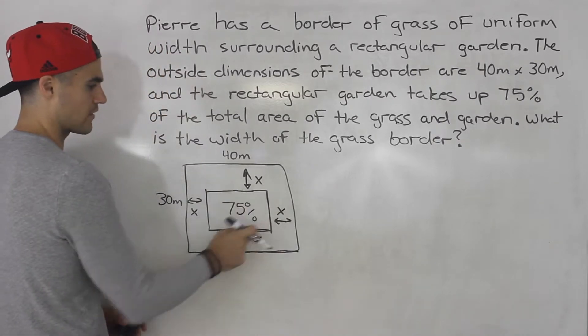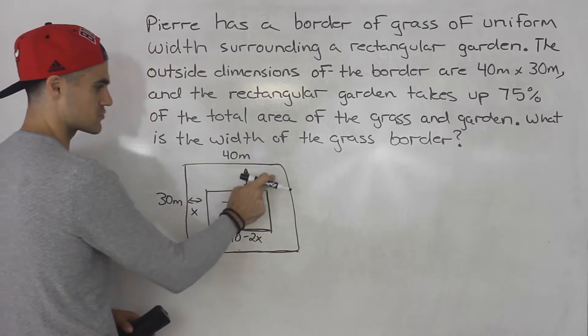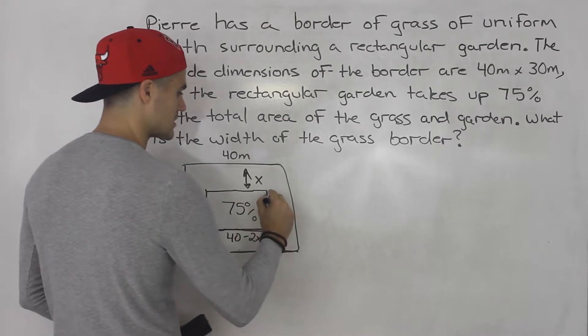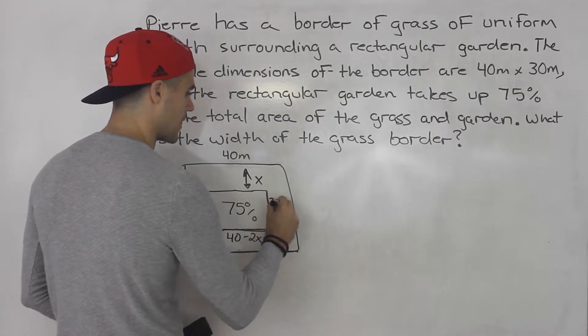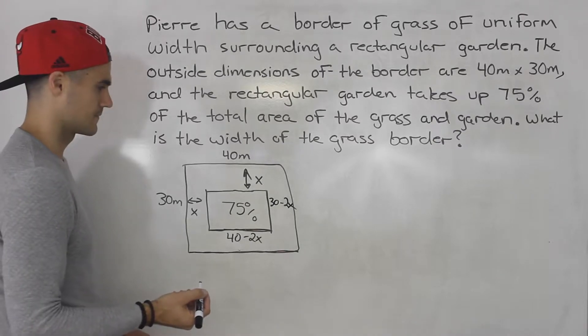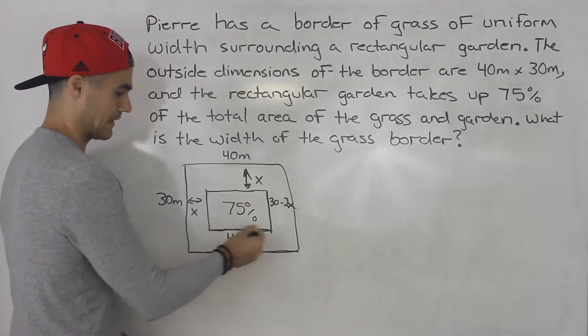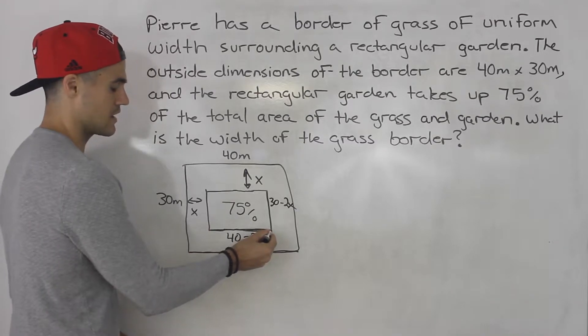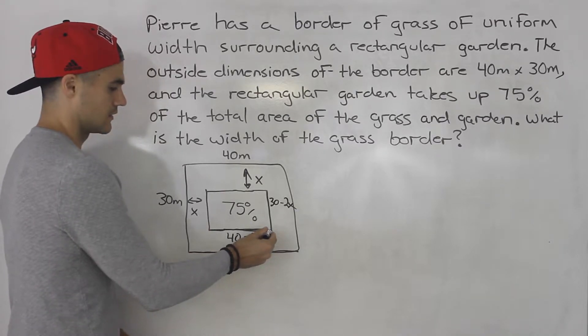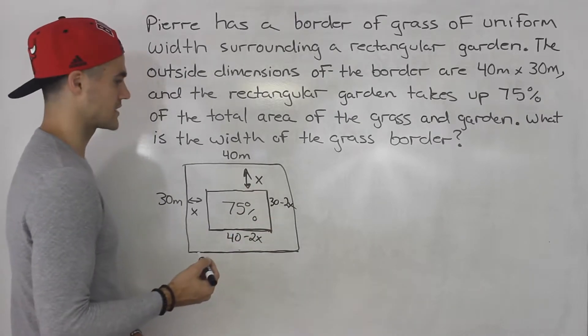What about the width of the garden? Well this total width here is 30. Then we're going to subtract x subtract x. So this is going to be 30 minus 2x. So now we have expressions for the length of the rectangular garden and the width of the rectangular garden.